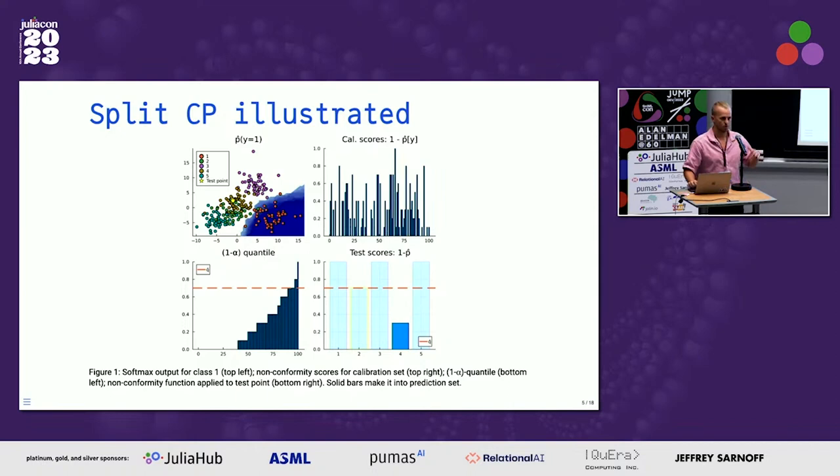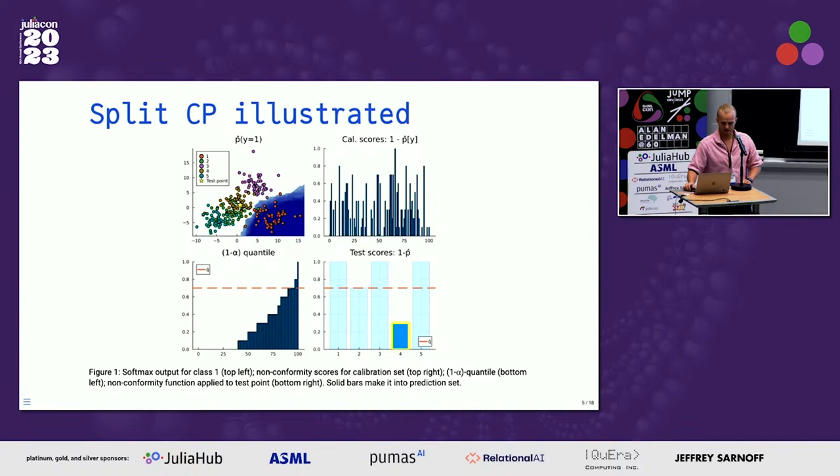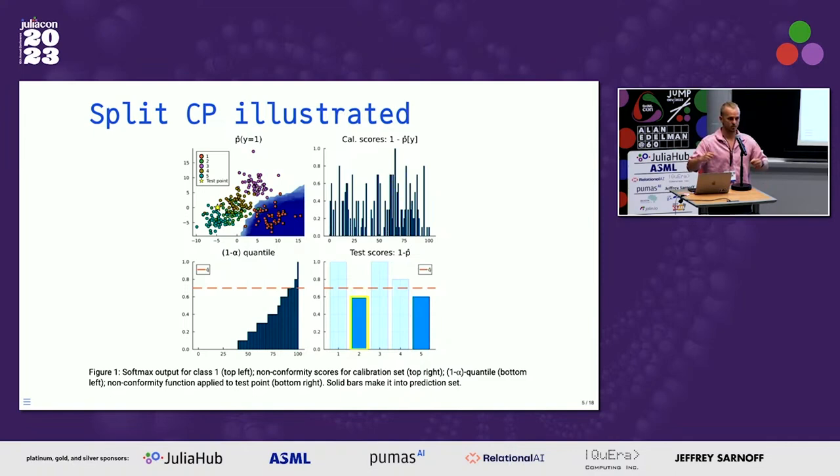This coverage holds provably. What you can see on the bottom right is the resulting prediction set for the test point illustrated as the yellow star in the top-left chart. This illustrates the idea of prediction sets as opposed to just one softmax output for the top label.